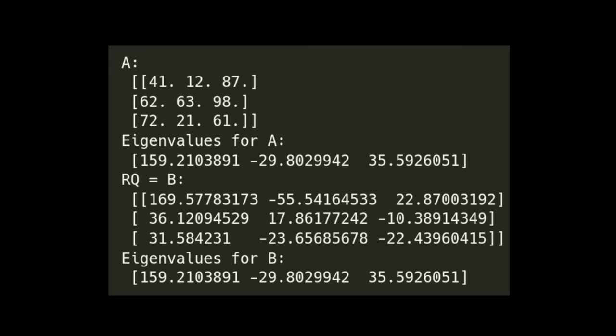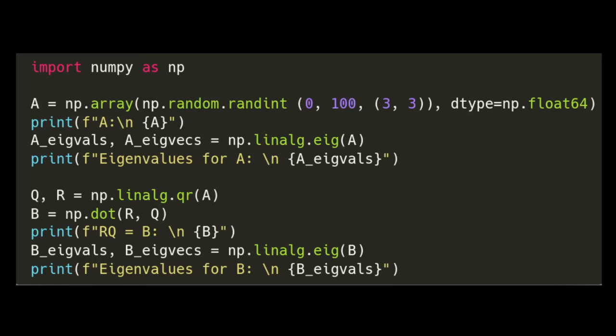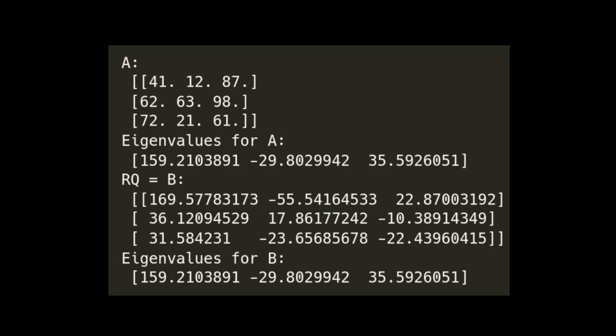But when we compute the eigenvalues for this B matrix, you can see they are exactly the same. I'll refer you back to this code. We're not doing anything crazy or different here. Two very different matrices, but they are similar matrices. And so they do share the same eigenvalues.